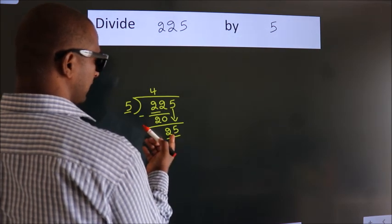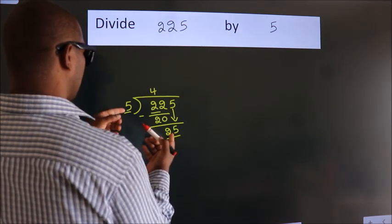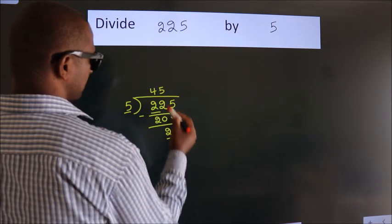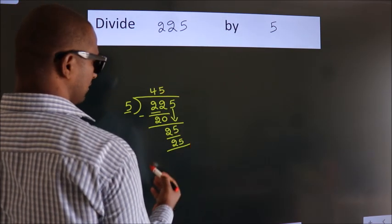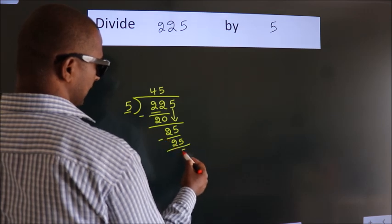When do we get 25 in the 5 table? 5 times 5 equals 25. Now we subtract. We get 0.